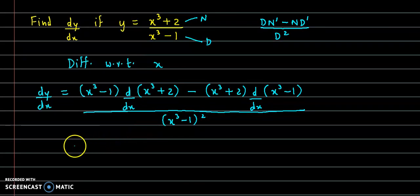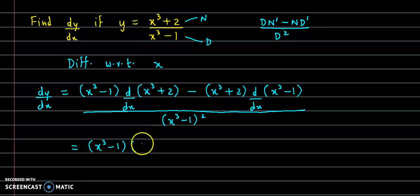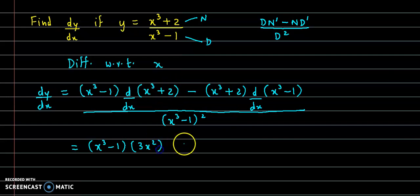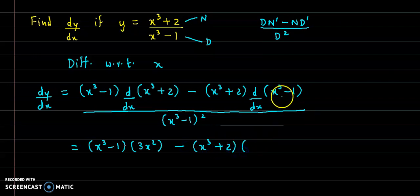Now differentiating: x cube minus 1 into derivative of x cube is 3x square, minus x cube plus 2 into derivative of x cube is 3x square, divided by x cube minus 1 the whole square.